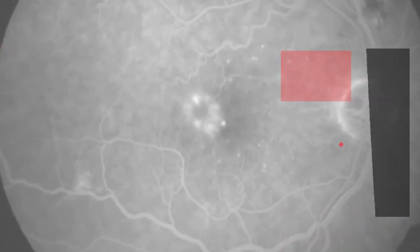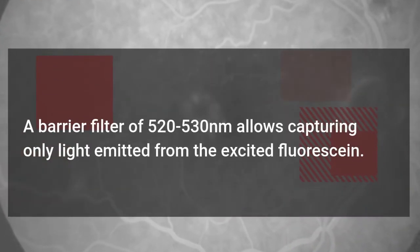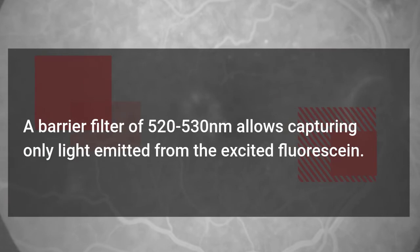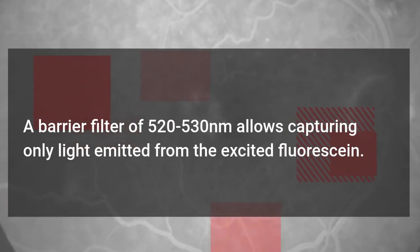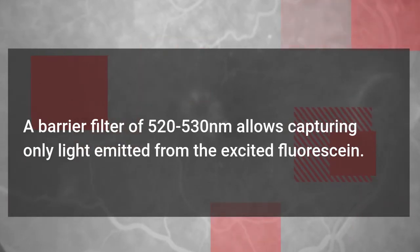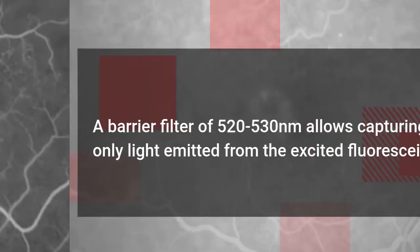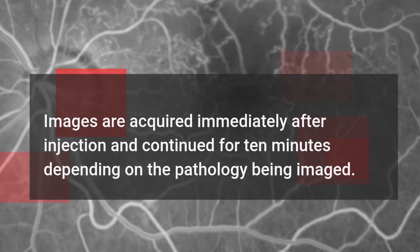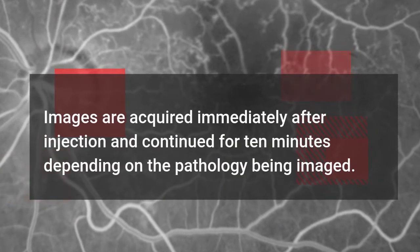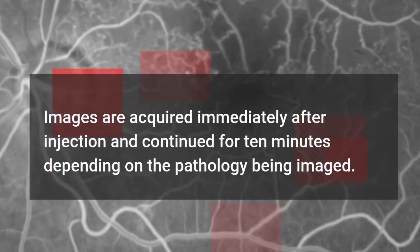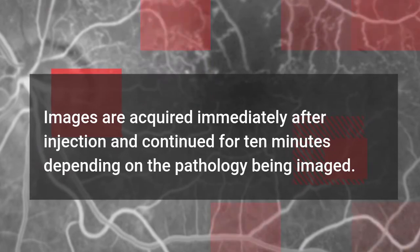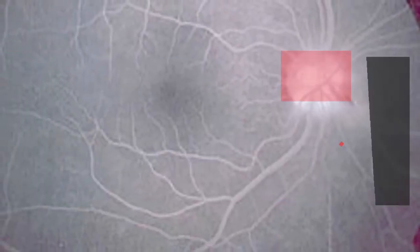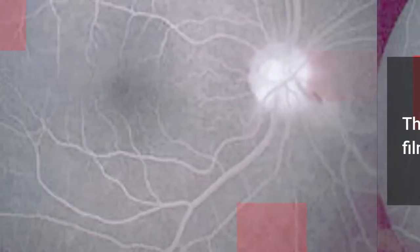A barrier filter of 520 to 530 nanometers allows capturing only light emitted from the excited fluorescein. Images are acquired immediately after injection and continued for 10 minutes depending on the pathology being imaged. The images are recorded digitally or on 35 mm film.